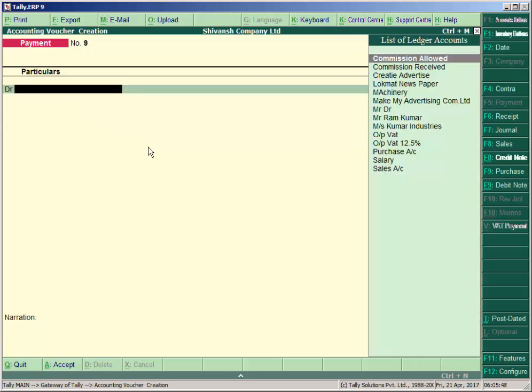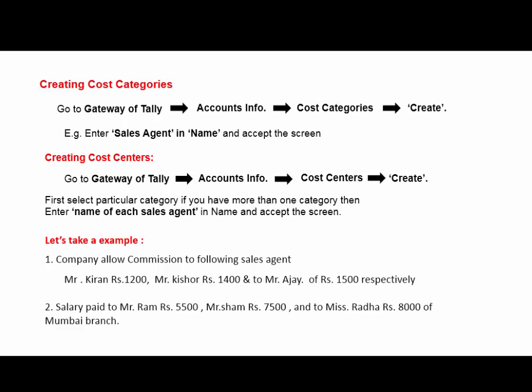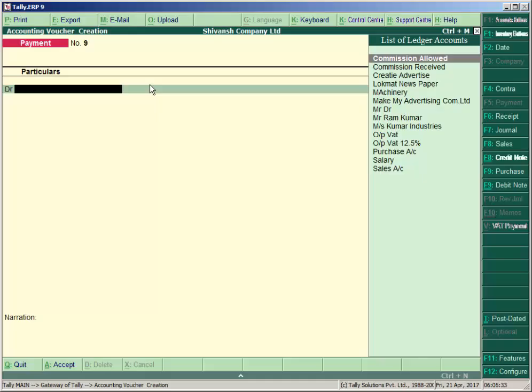Let's take another example. The second transaction is: salary paid to Mr. Ram 5500, Mr. Shyam 7500, and Ms. Radha 8000. Mumbai branch is the category, and Ram, Shyam, and Radha are the cost centers. You can directly create the cost center and cost category during entries. Create a ledger for Salary — we already have a ledger here, so check that 'Cost Centers are Applicable' is Yes.